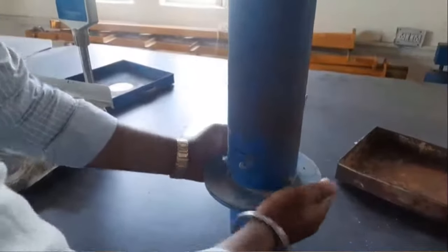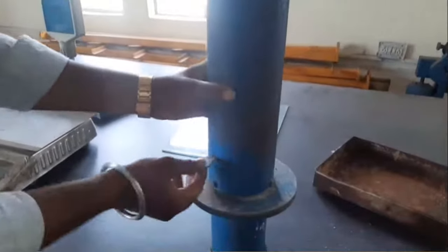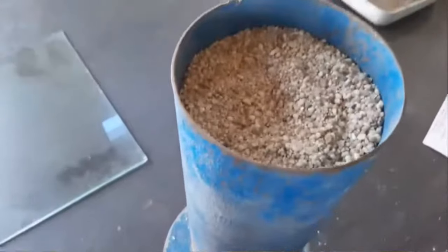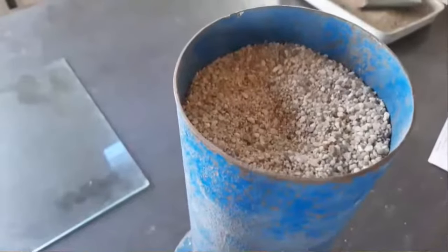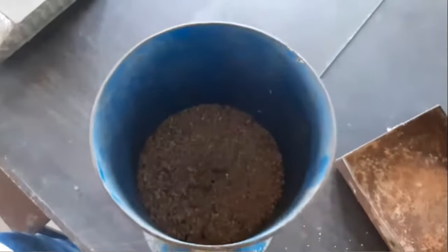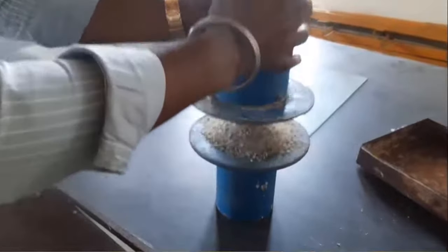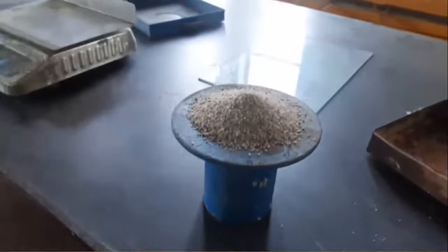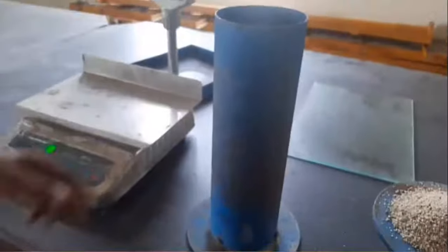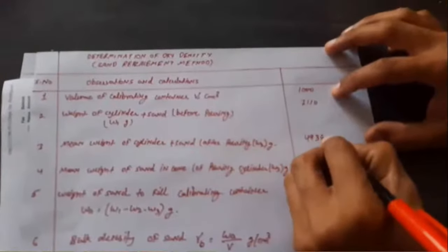Keep the sand pouring cylinder over the calibrating container, open the shutter, and allow the sand to pass into the calibrating container until there is no further movement of sand. Take it up very carefully and weigh it again. Record this weight as W2 in the observation sheet.